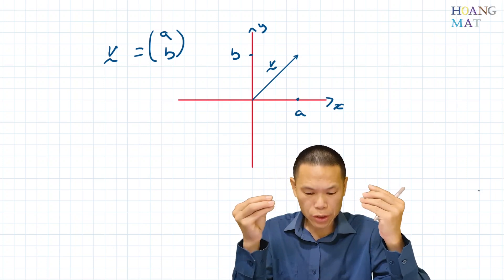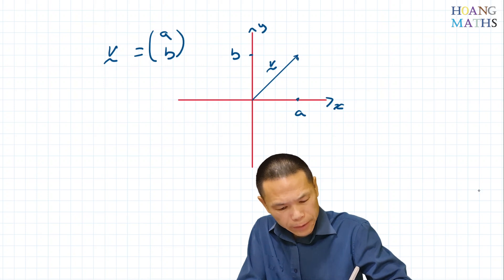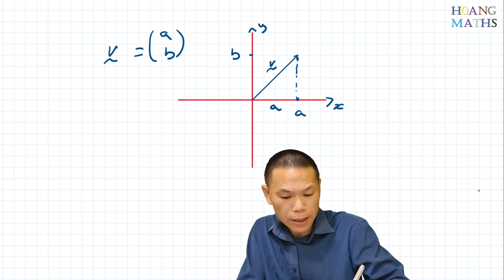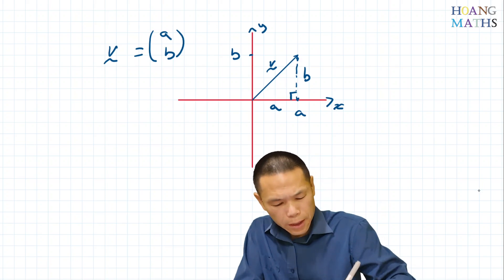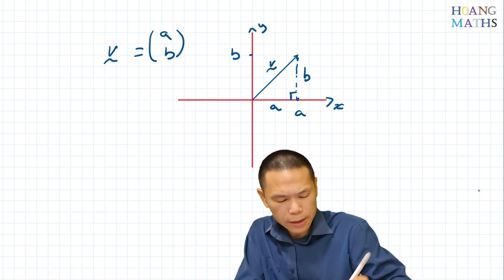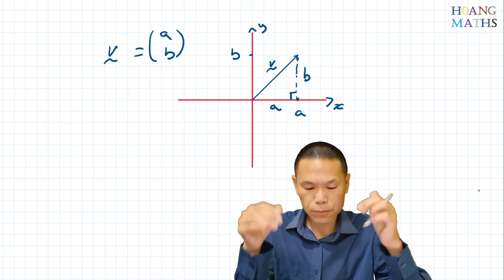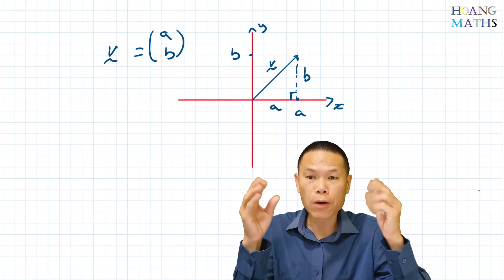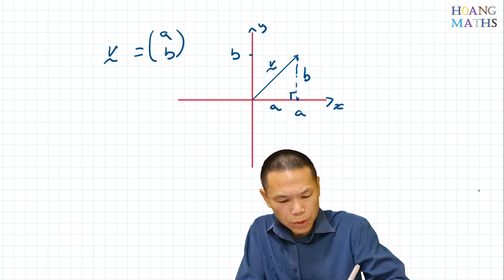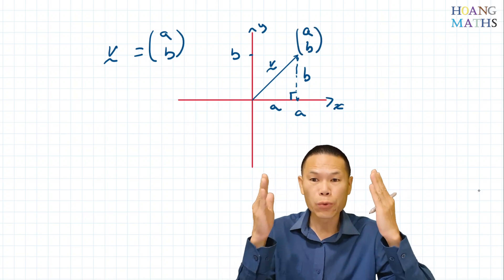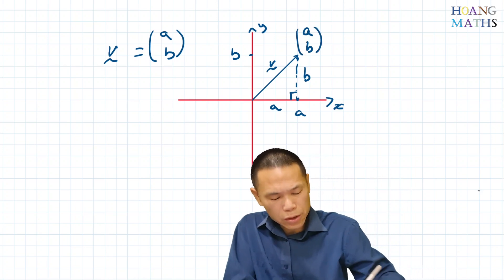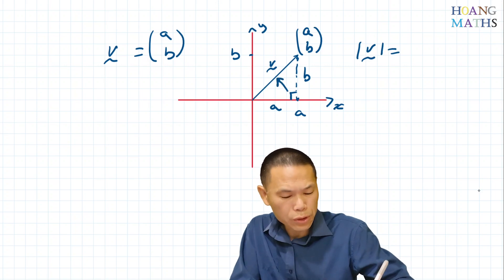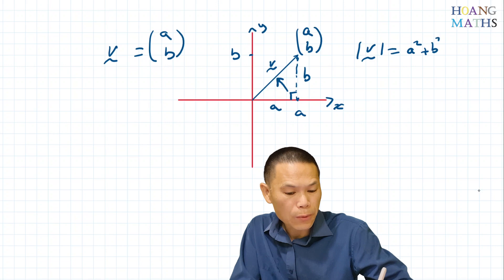So we can find the magnitude of V. The distance from the origin horizontally is A units and vertically is B units. The magnitude of V is the distance from the origin to the point (A, B). We can use Pythagoras' theorem: |V| is equal to the square root of A squared plus B squared.